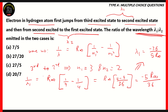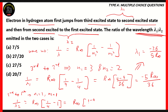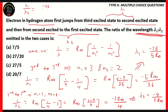For the second excited to first excited state, n1 equals 2 and n2 equals 1. So one over lambda-two equals R times (one-fourth minus one), which equals R times (1 minus 4) over 4, giving negative 3R over 4. Therefore lambda-two equals negative 4 over 3R. Now dividing lambda-one by lambda-two: (negative 36 over 5R) multiplied by the reciprocal of lambda-two, which is (negative 3R over 4).